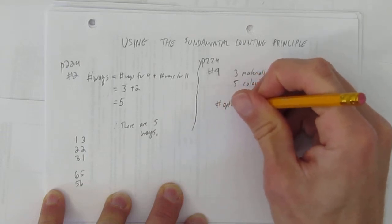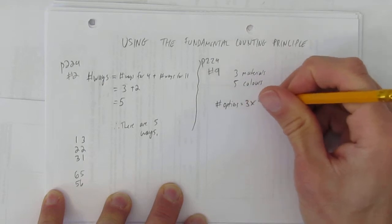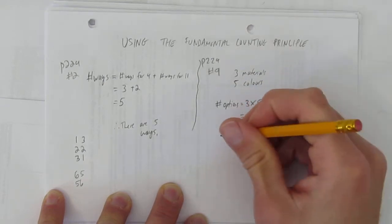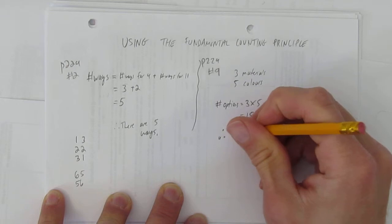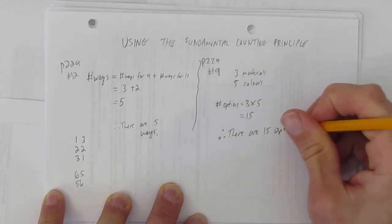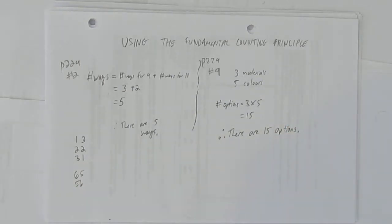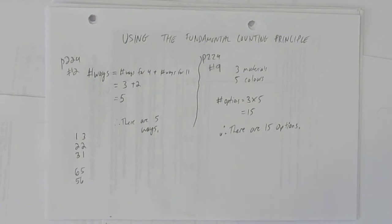The answer is, the number of options equals, you have three materials, times five colors. In other words, you have 15 options. Therefore, there are 15 options. And those are two simple examples of using the fundamental counting principle.